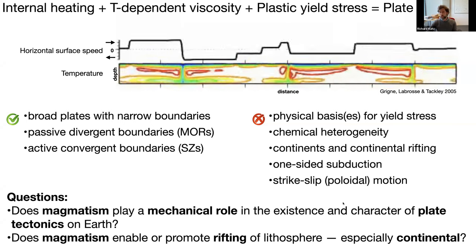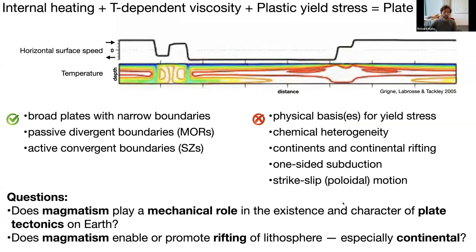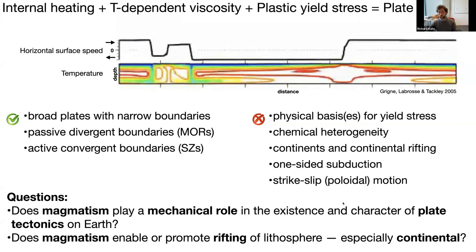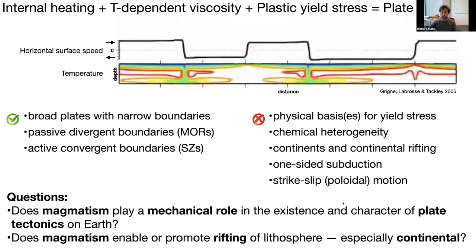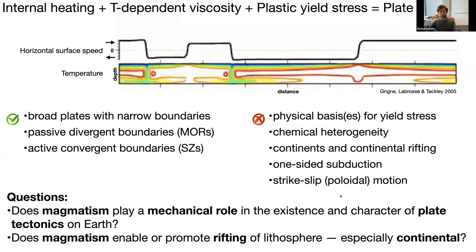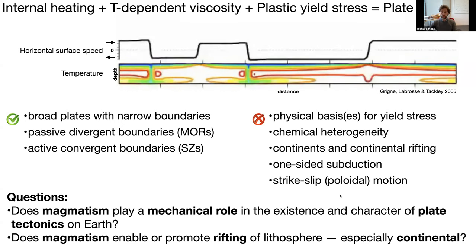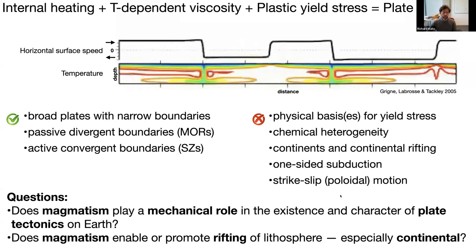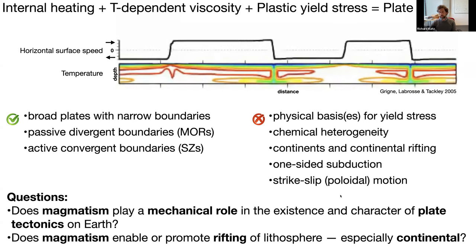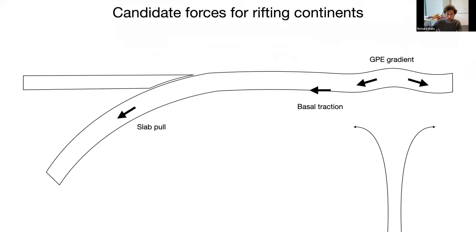This leaves us with some big open questions. Does magmatism play a mechanical role in the existence and character of plate tectonics on Earth? Would this simulation look very different if magma were part of the mechanical model? Does magmatism enable or promote rifting of the lithosphere, and especially the continental lithosphere? This is the theme I want to focus on today.